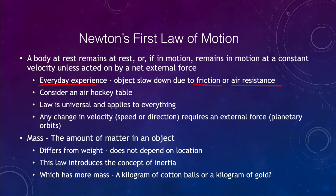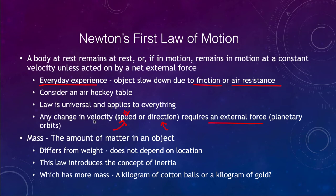Any change in velocity requires a force. Remember, velocity is a vector — it has a speed and a direction. If either of these is changing, that requires an external force. We can think of that as the moon orbiting around Earth, or Earth orbiting around our sun. Even though the speed stays roughly the same, the direction is constantly changing. Therefore the velocity is changing, and there must be a force acting upon them — which we'll look at later as gravity.